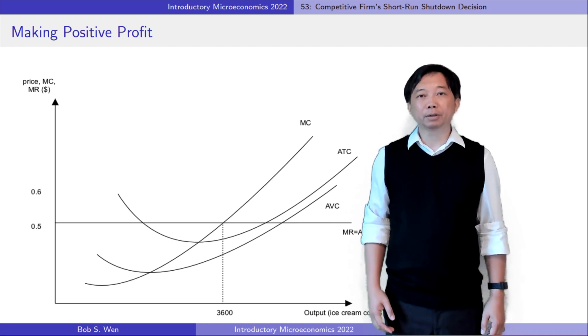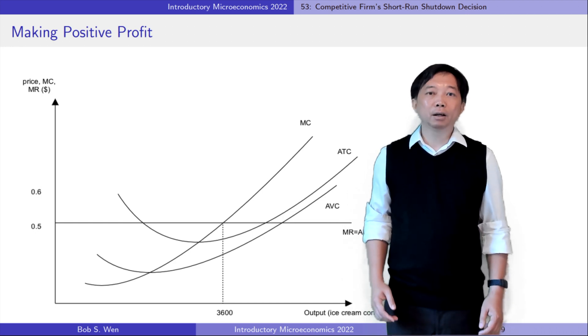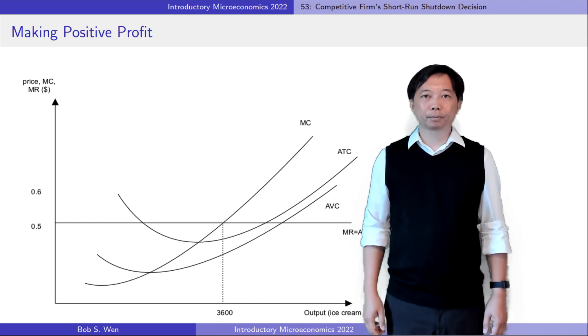If the market price is greater than the minimum average total cost, we already know from the previous video that the firm will operate to earn a profit.